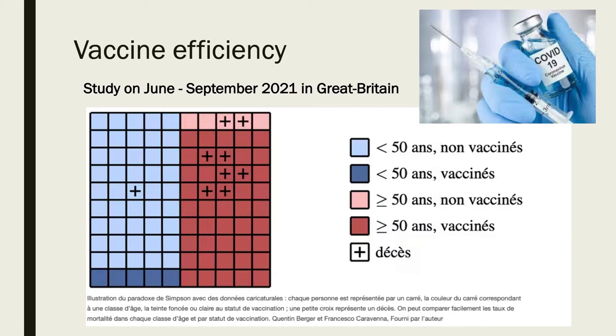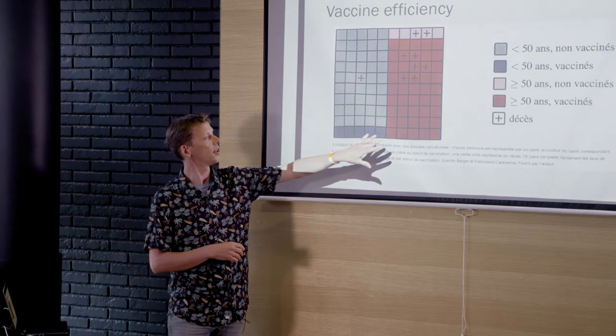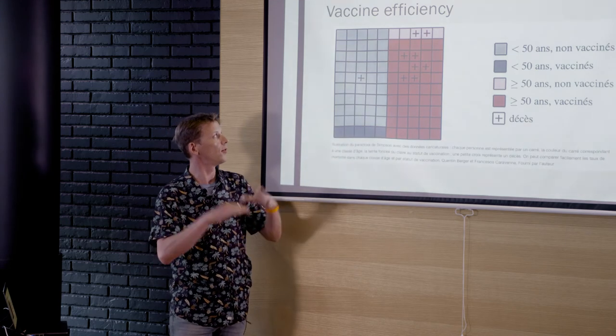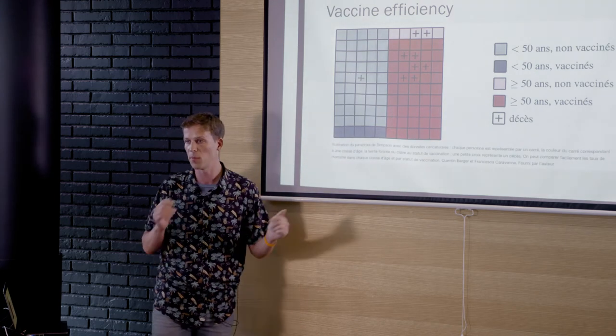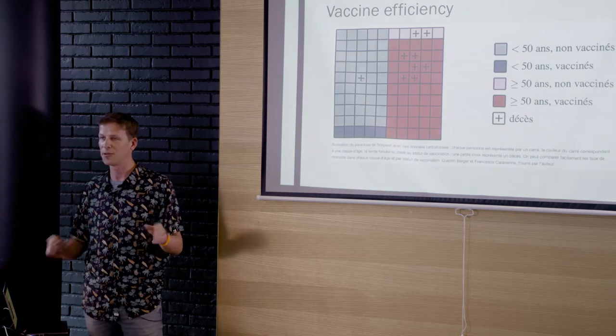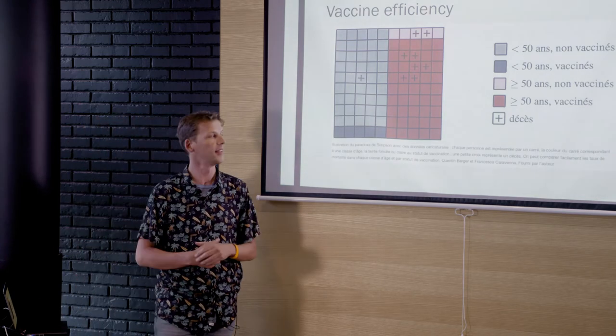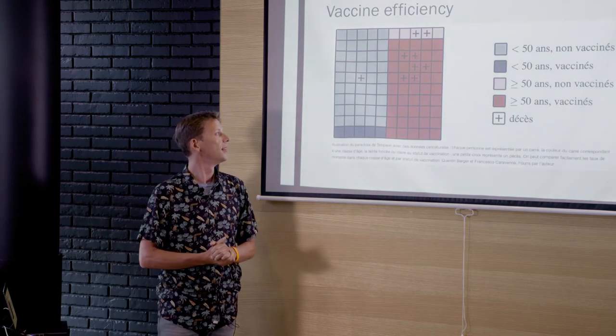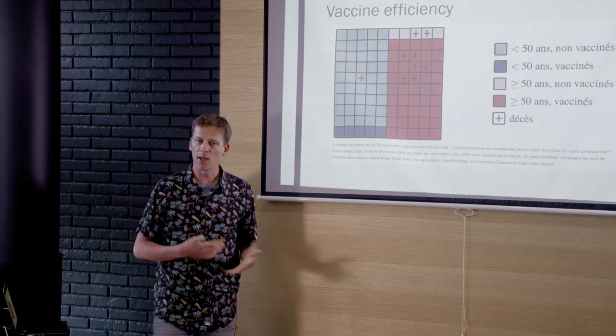And so the first surprising thing is that in each part of the population vaccine is good, but in the overall part, it's not good. This is the same picture. I'm not playing with you, right? It's the same. I didn't put crosses in the meanwhile. It's really the same. So first surprising stuff, but then we can still think about it. Okay.